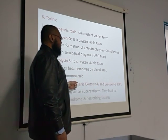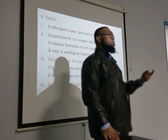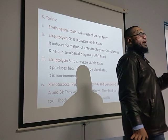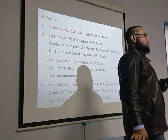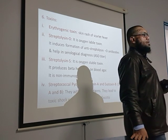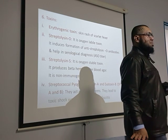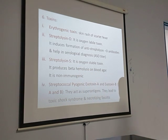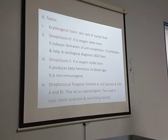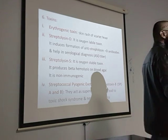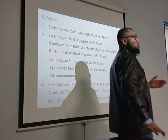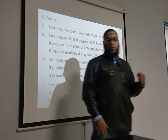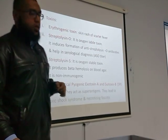The pyrogenic exotoxins A and B are superantigens — they stimulate a large number of T lymphocytes, which in turn produce a large number of cytokines. This massive cytokine release causes fever, hypotension, and multi-organ failure, which is toxic shock syndrome.